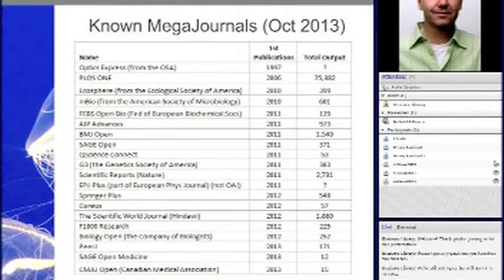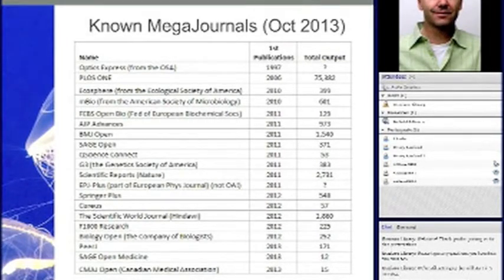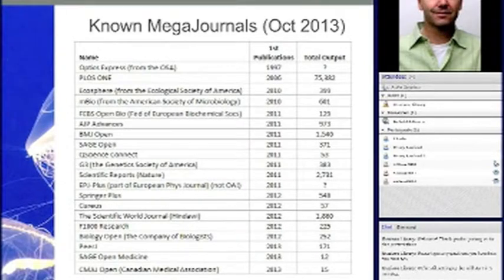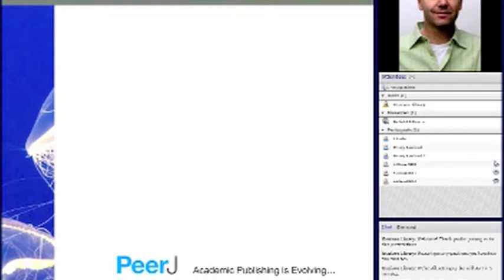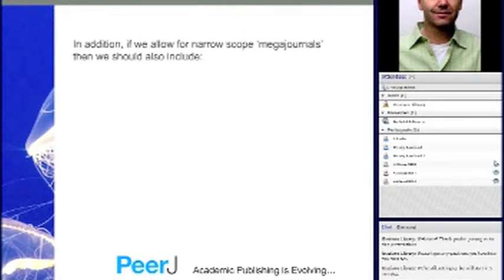PLOS-1 isn't the only megajournal — there are about 20 or 30 of them now. This slide lists the ones that have launched and how many articles they've published since creation. PLOS-1 is the biggest at 75,000 articles through end of 2012. There's Scientific Reports from Nature, a book about megajournals, and BMJ Open which covers all of medicine. Some of these get quite big as well. If you add up the output of all megajournal-model journals, the total gets much bigger.